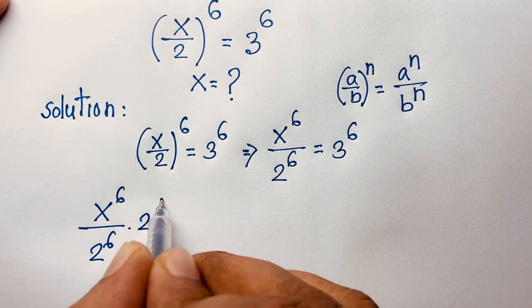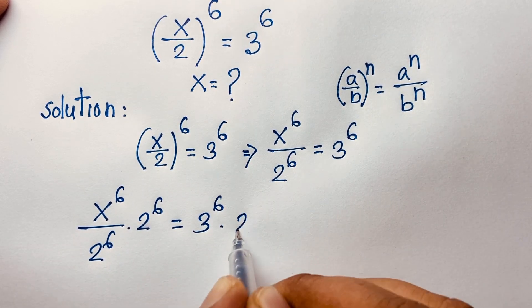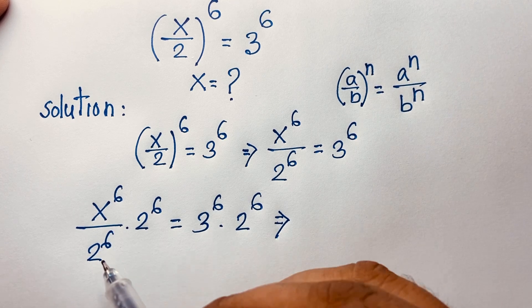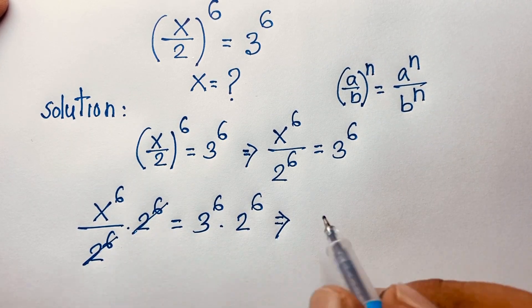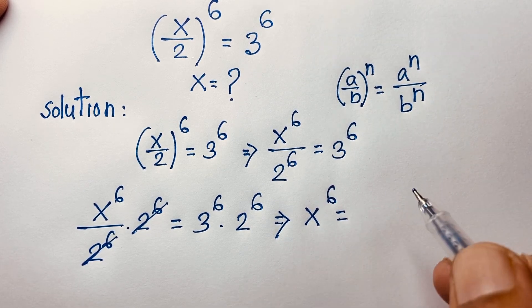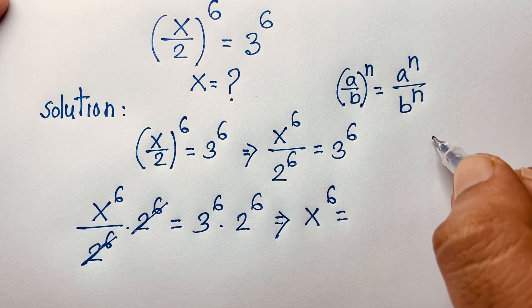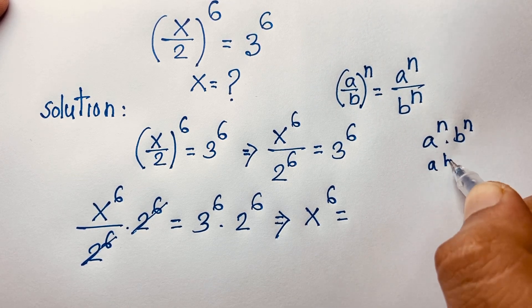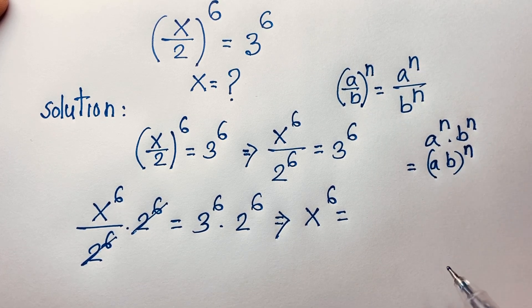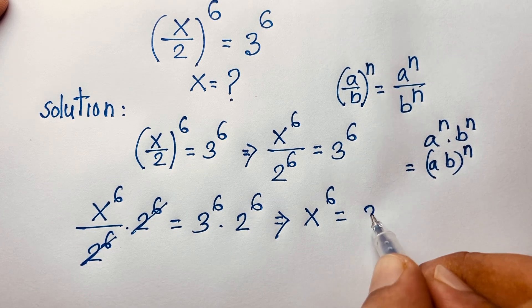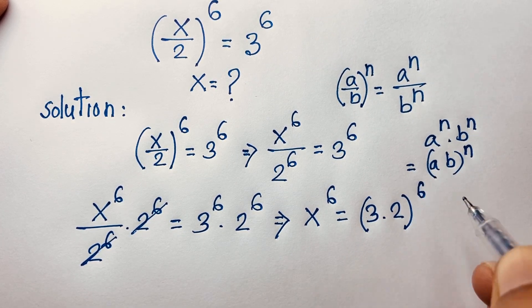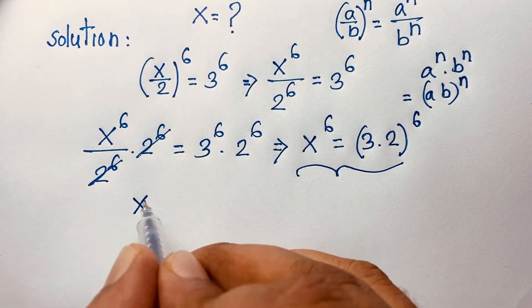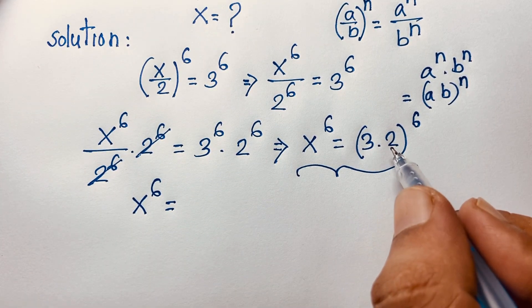Now I multiply both sides by 2^6. So x^6 / 2^6 × 2^6 = 3^6 × 2^6. The 2^6 terms cancel out, giving x^6 = 3^6 × 2^6. Using the exponential law a^n × b^n = (ab)^n, since the exponents are the same, it becomes x^6 = (3 × 2)^6, so x^6 = 6^6.